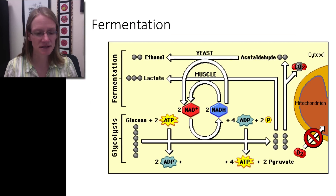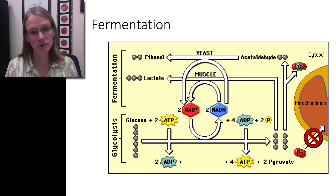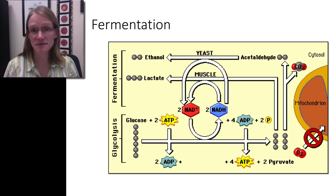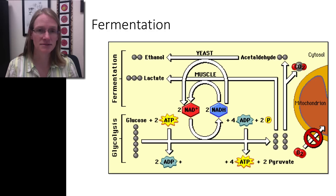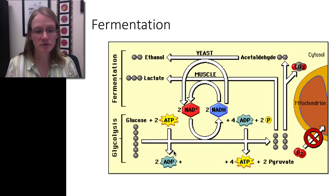In certain organisms that live in really low oxygen environments — or organisms that don't normally live there but find themselves in those situations — they deal with it through the process of fermentation. All organisms go through glycolysis: we start with glucose, release a little bit of ATP, and create pyruvate.